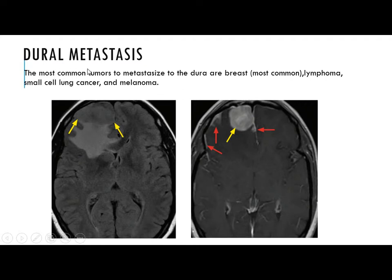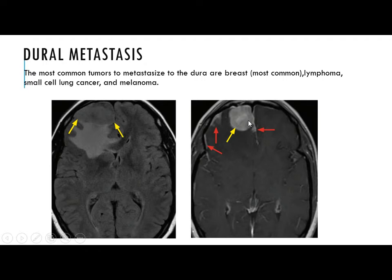Now we are talking about dural metastasis. The most common tumors to metastasize to the dura are breast cancer (the most common), lymphoma, small cell lung carcinoma, and melanoma. On axial FLAIR, there is a well-defined mass in the right frontal lobe, iso-intense with large vasogenic oedema — we cannot differentiate intra-axial from extra-axial. On T1 with contrast, we can see a homogeneously enhancing mass with dural enhancement, confirming it is extra-axial, dural-based.